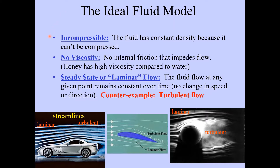One of the characteristics of ideal fluids is that we will treat the fluid as incompressible. That means the fluid has a constant density because it can't be compressed. For a fluid like water, this is a fairly reasonable approximation — water is for the most part an incompressible fluid.